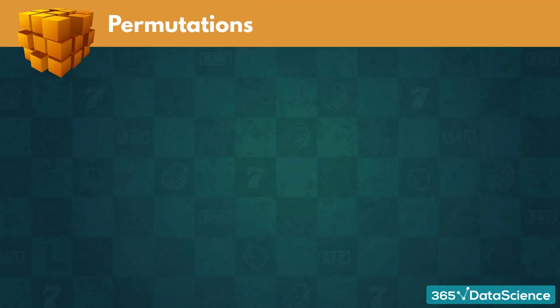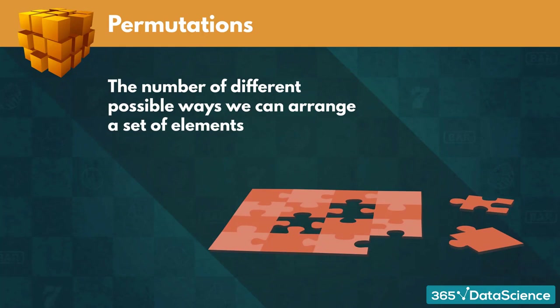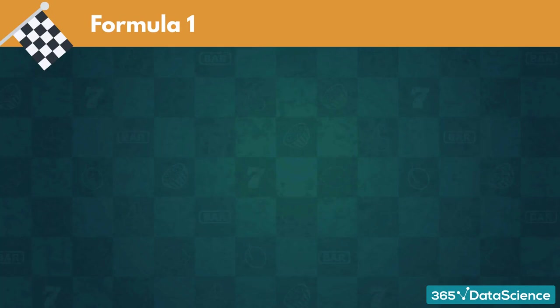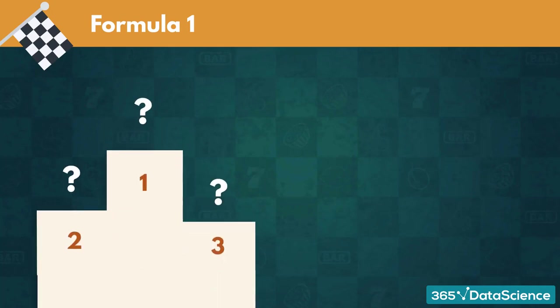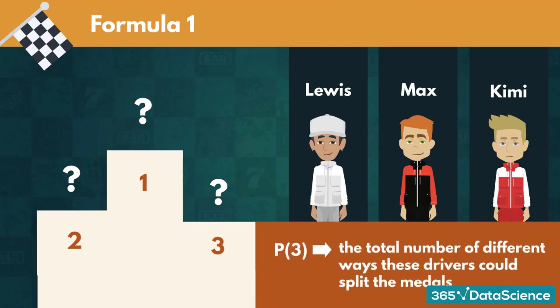We are going to look at one of the most commonly used parts of combinatorics – permutations. Permutations represent the number of different possible ways we can arrange a set of elements. These elements can be digits, letters, objects, or even people. Imagine you haven't watched the latest Formula 1 race, but your friend spoiled who the three drivers on the podium are – Lewis, Max, and Kimi. A permutation of 3, denoted P(3), would express the total number of different ways these drivers could split the medals among one another.